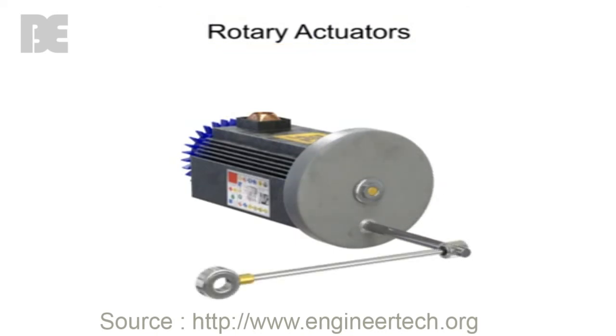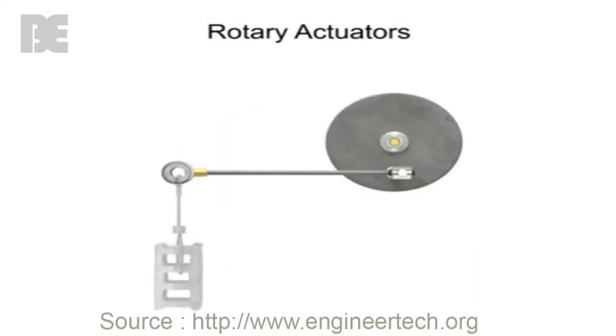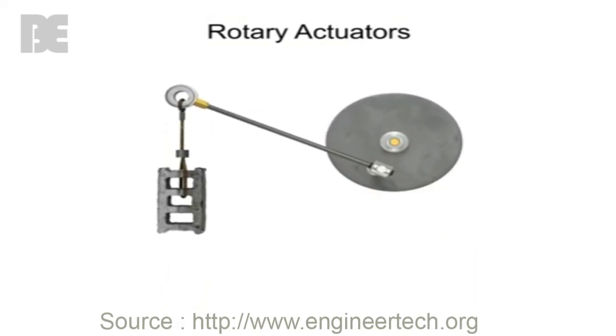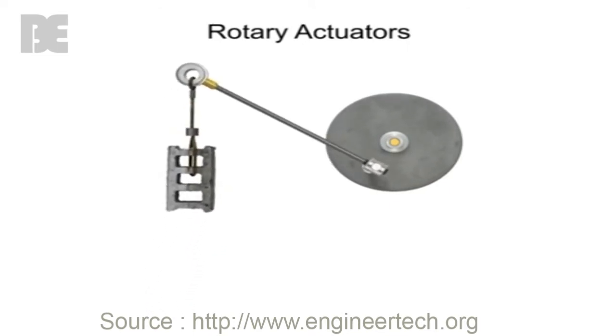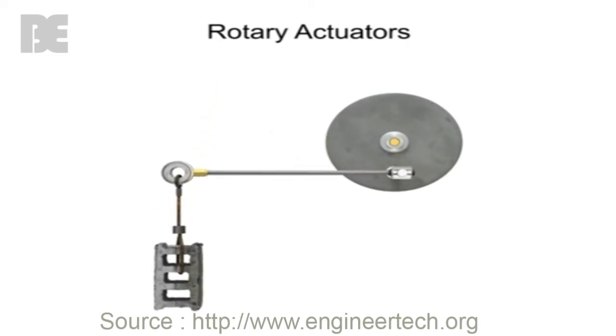A true rotary actuator produces work by direct action of fluid pressure against internal veins. Work is defined as a force applied over a distance. Rotary actuators produce a special type of rotational work called torque. Torque occurs when a force acts on a radius.